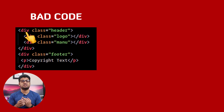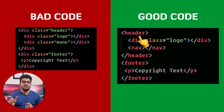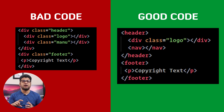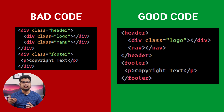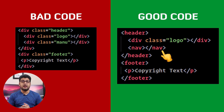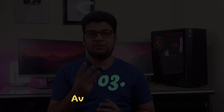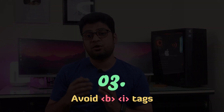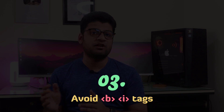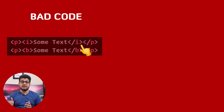Number two: start using HTML5 tags. When beginners create a website, they often use div for the header section, footer section, and other areas. In HTML5, you have the header tag for the header area, the footer tag for the footer area, the section tag for sections, and the nav tag for navigation. You should use these instead of div.